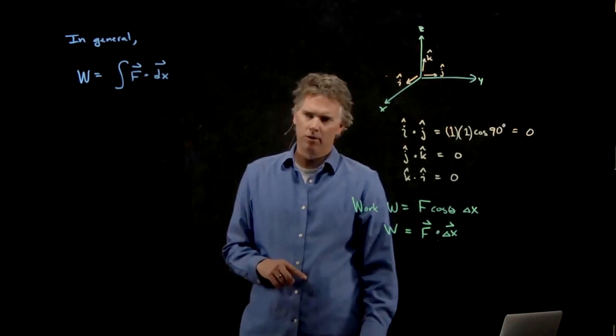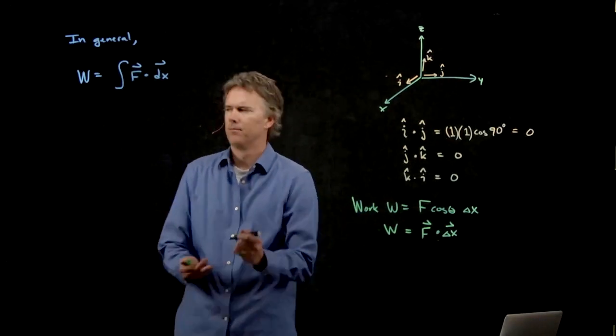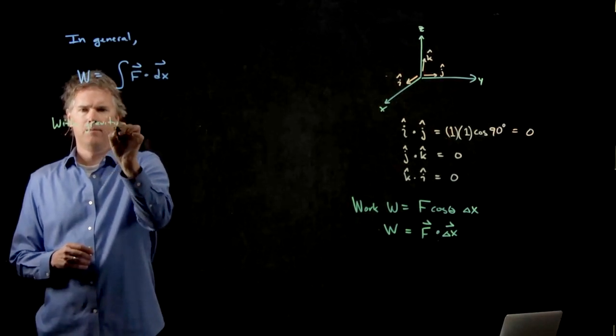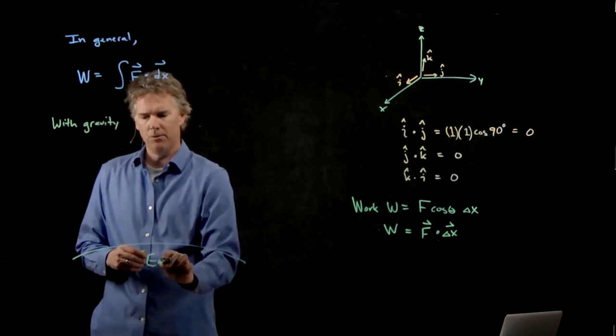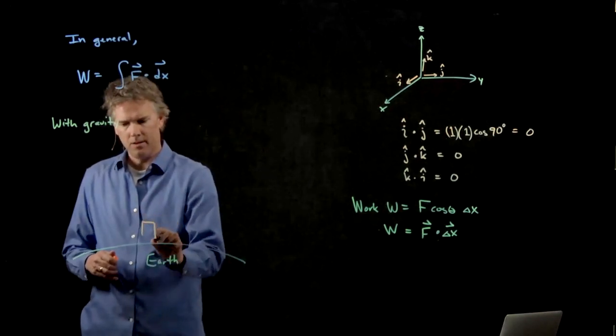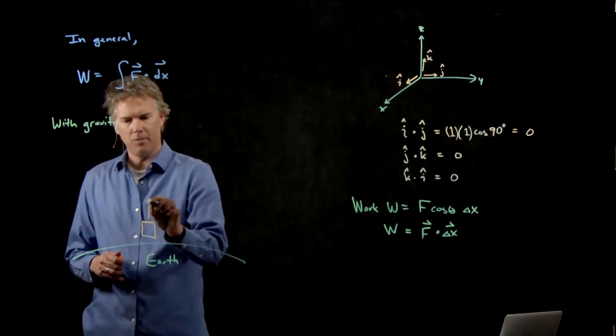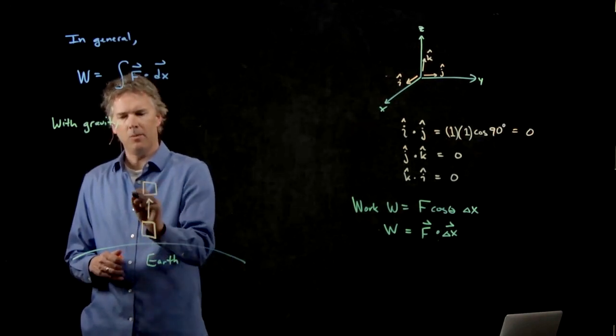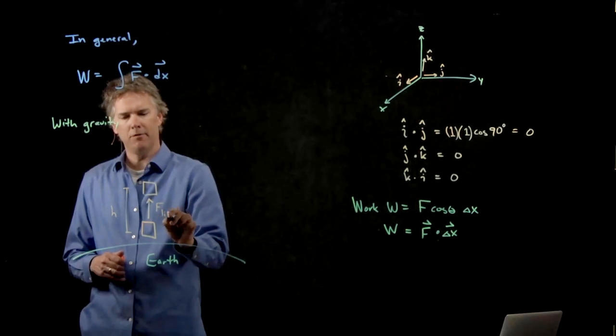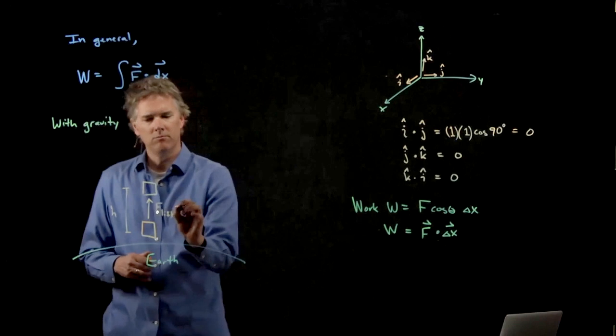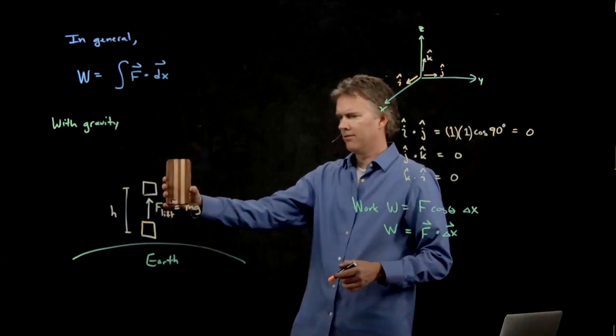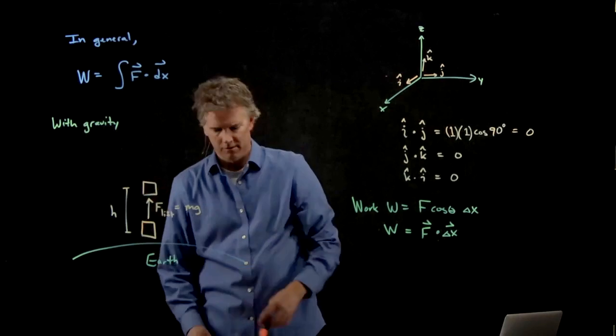Let's see how that works for something that we understand, like gravity. Gravity says objects are pulled towards the center of the earth. If I want to lift an object, I'm going to have to apply a force to it. And let's say we lift it a height h by applying a lifting force. And that lifting force doesn't have to be any bigger than mg. I'm going to lift it by applying mg to it, and it's going to go up a distance h.